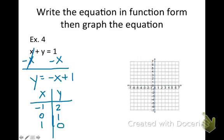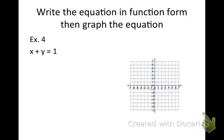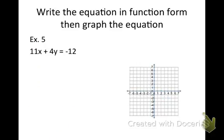So a negative 1, 2 would be about right there. 0, 1, and 1, 0. And draw the line with the arrows. Okay. Fun.